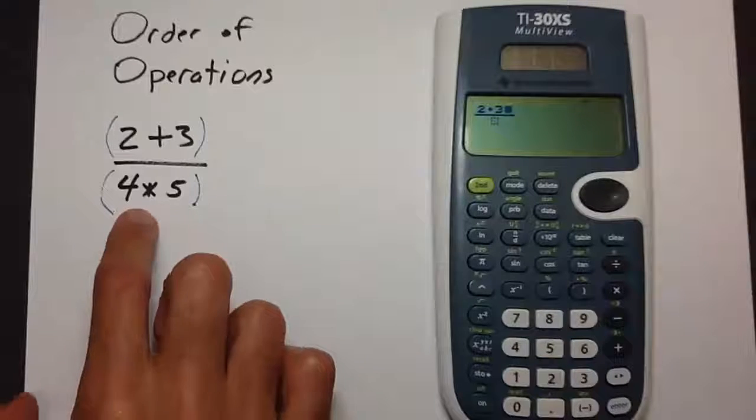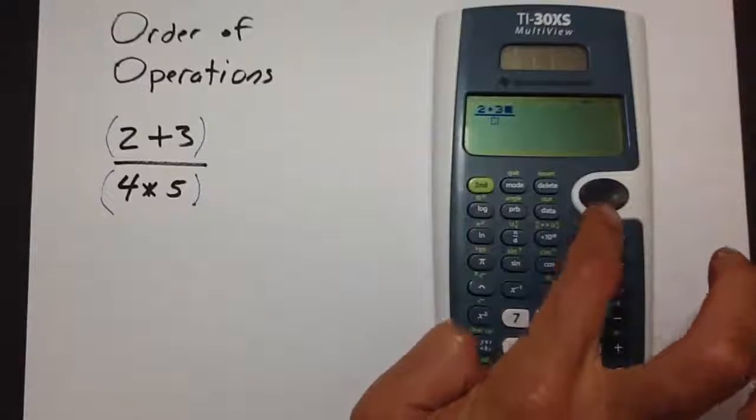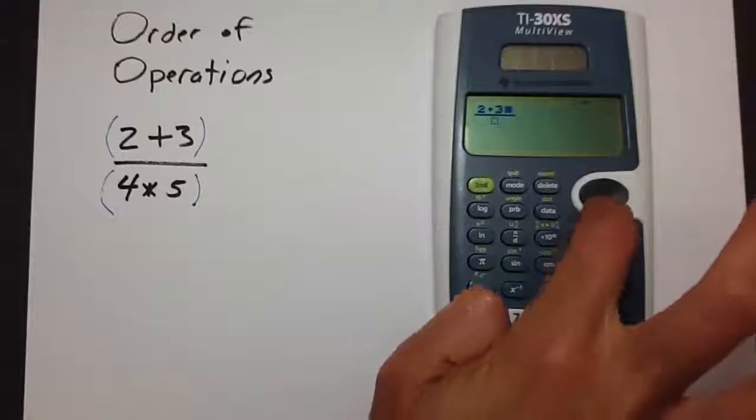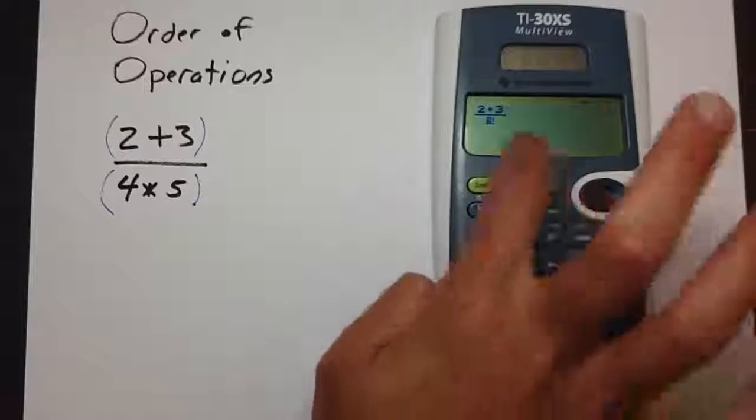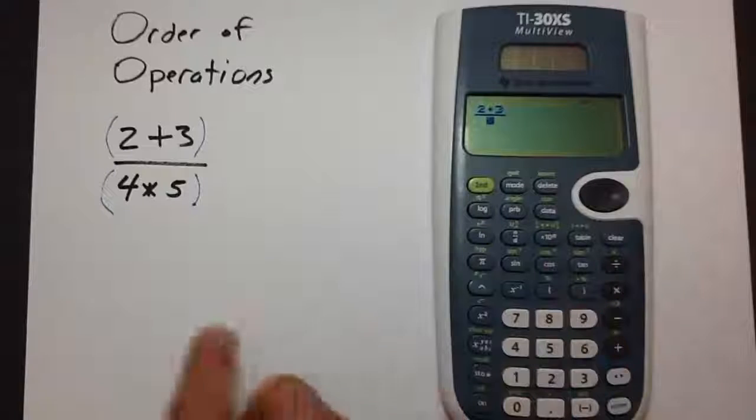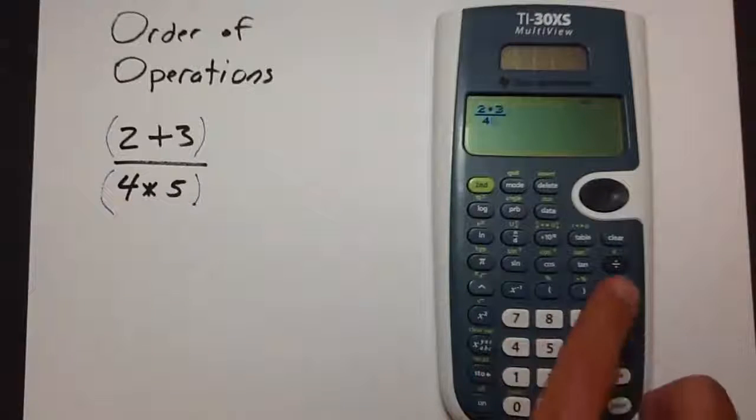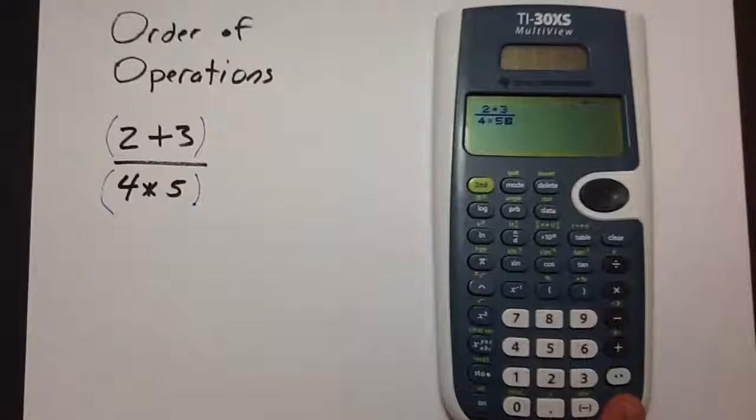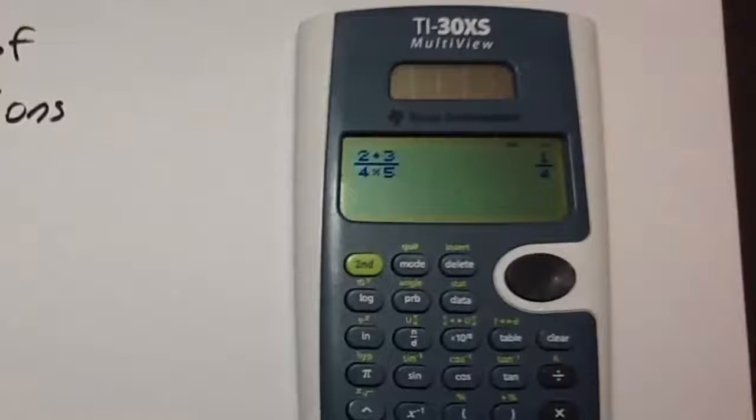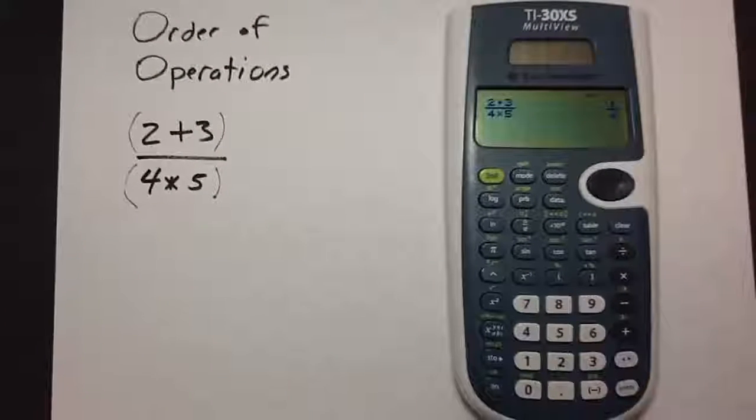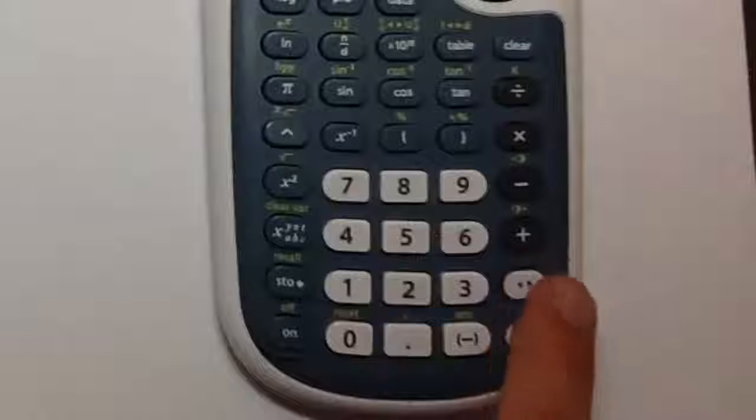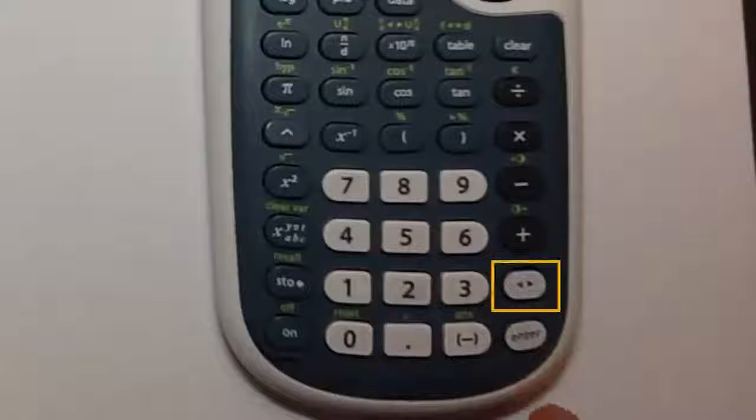Now to enter the denominator, we press the down arrow on this little oval. When we press down on it, it moves to the bottom. Then we can enter 4 times 5, 4 multiply 5. When we press enter, it gives us the answer 1 over 4 in fraction form. If you wish to change this to a decimal, you can place the arrow keys right here. It will automatically change it to a decimal for you.